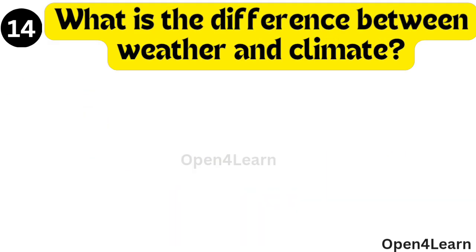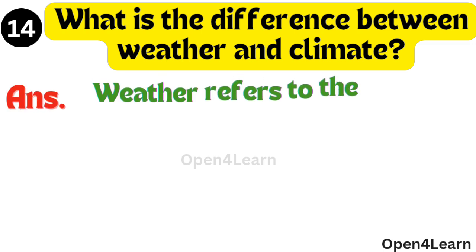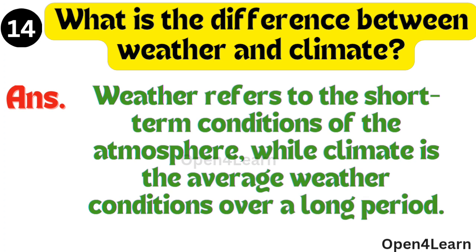Question, what is the difference between weather and climate? Answer, weather refers to the short-term conditions of the atmosphere while climate is the average weather conditions over a long period.